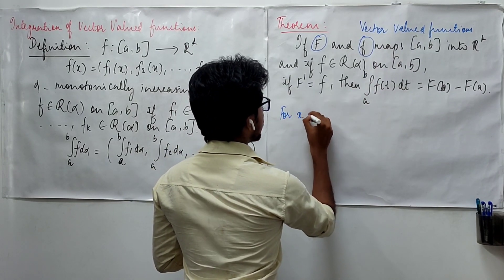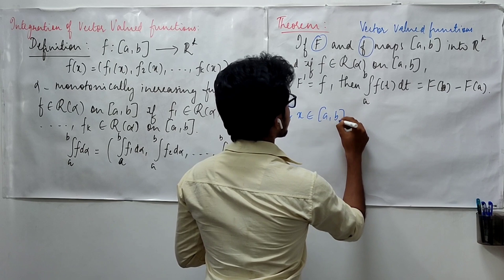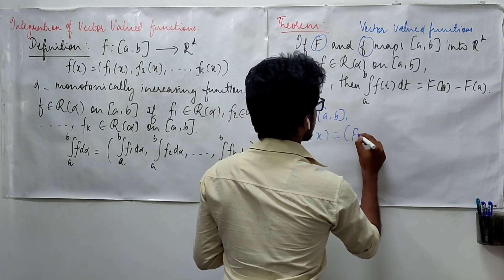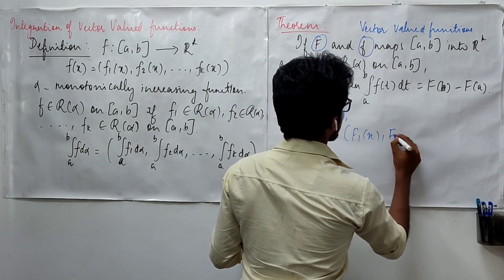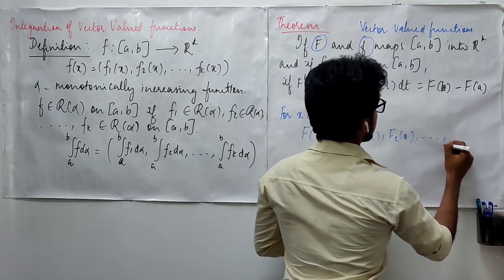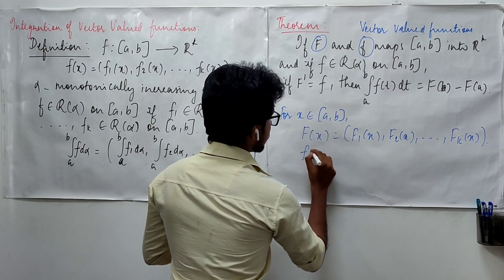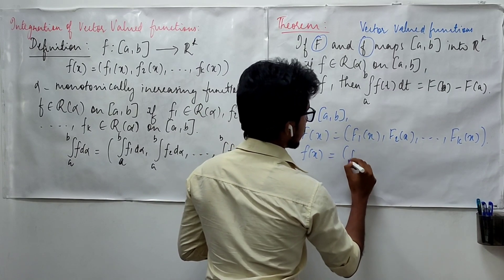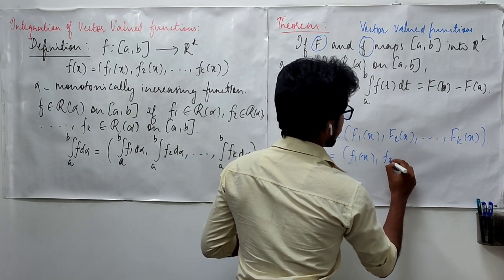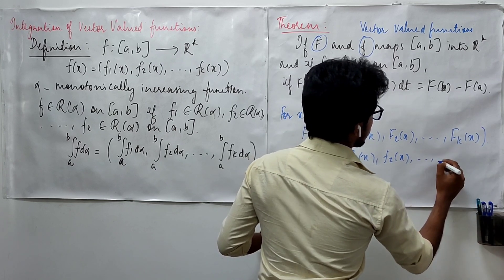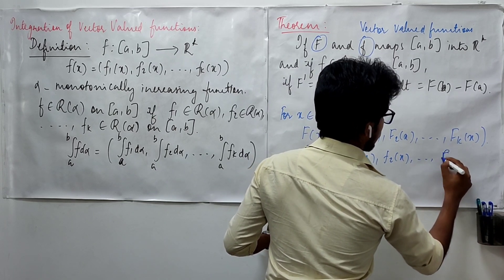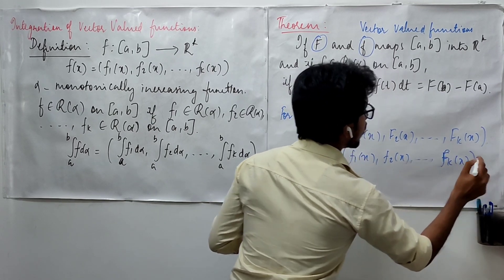So, for some element in [a,b], your big F(x) is going to be F1(x), F2(x) till Fk(x). And similarly, your small f(x) is small f1(x), f2(x) until small fk(x).